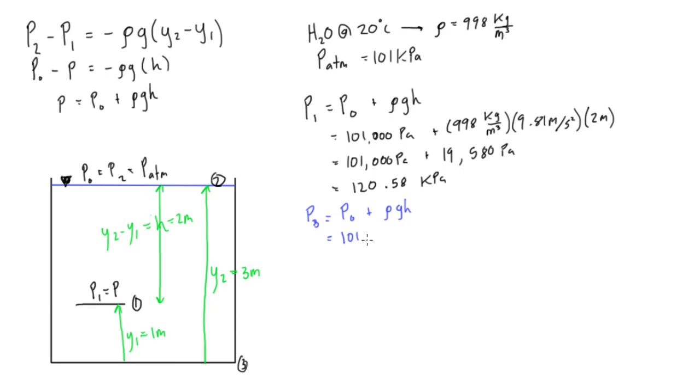So again, we'll have 101 thousand pascals plus 998, I'm just going to drop the units to save a little bit of time, times 9.81 times 3 meters now. So we're going to get 101 thousand plus, this turns out to be 29,371, then this is all pascals, so we get a final pressure at the bottom of the tank to be 130,371 pascals, or we could say 130 kilopascals.